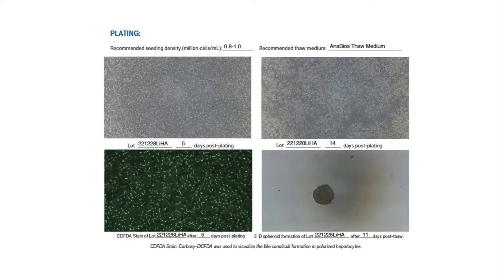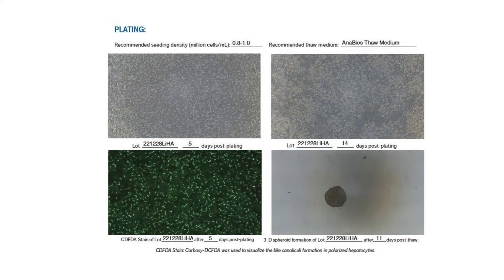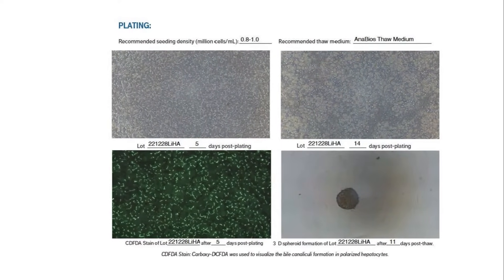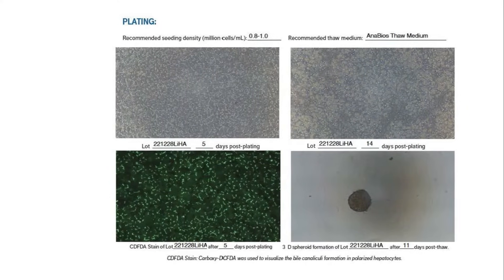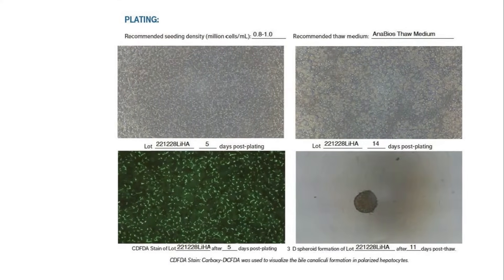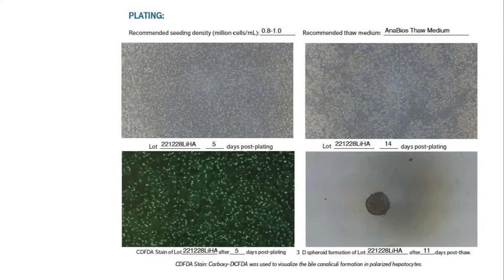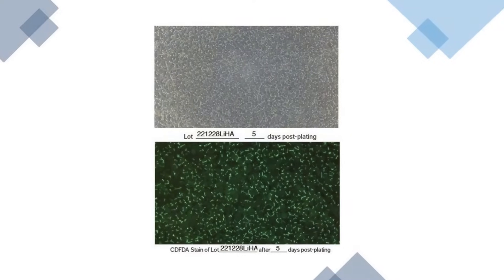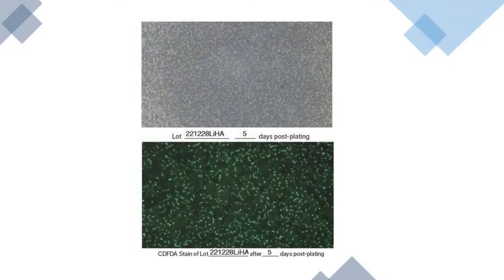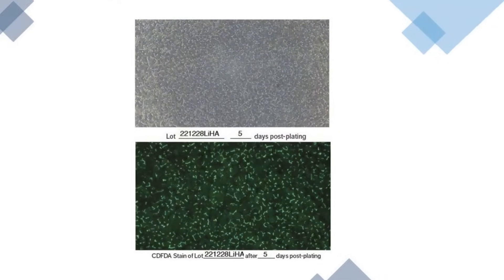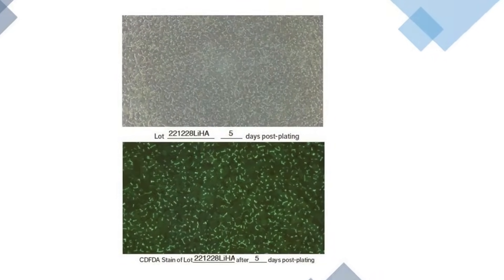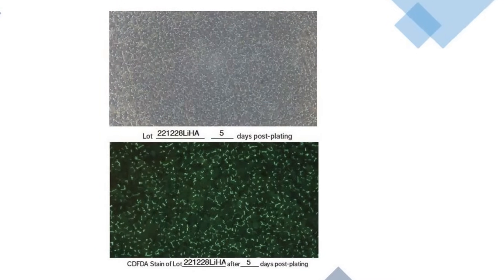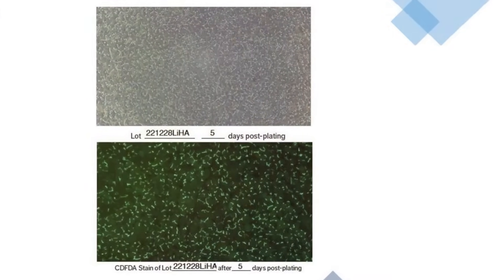Next, scrutinize the provided images, as they represent the lot's best examples and set your expectations. It is important to see evidence that the cells maintain a healthy monolayer at least through day 5 in culture. Also, there should be evidence of robust formation of bile canaliculi, a very important indicator of cell health.